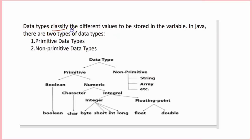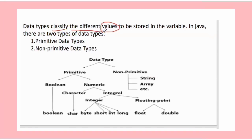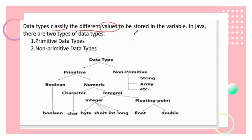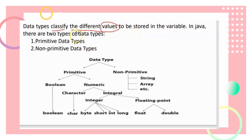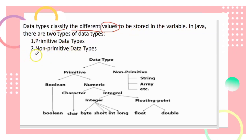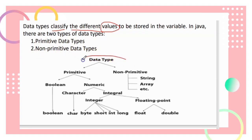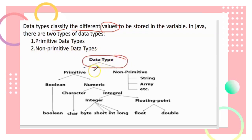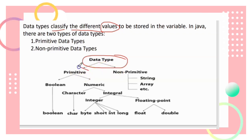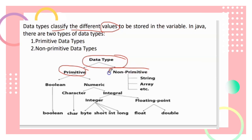Data types classify the different values to be stored in a variable. In Java, there are two types of data types: primitive data types and non-primitive data types.